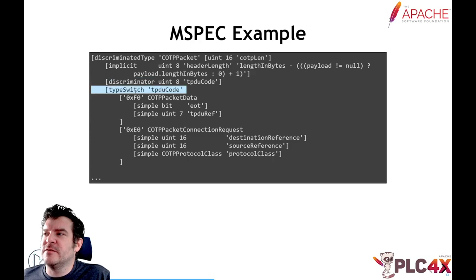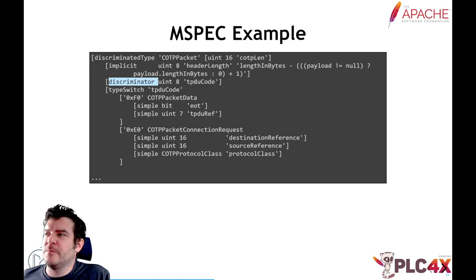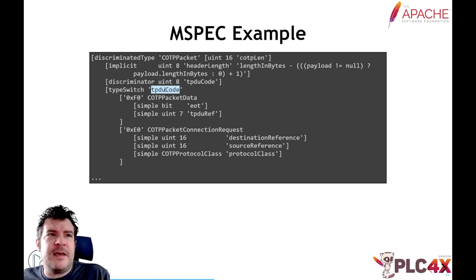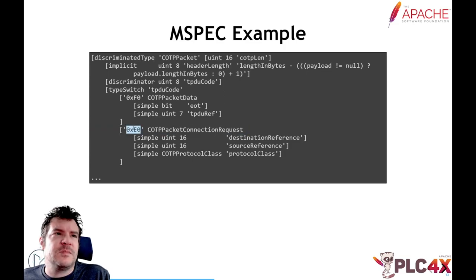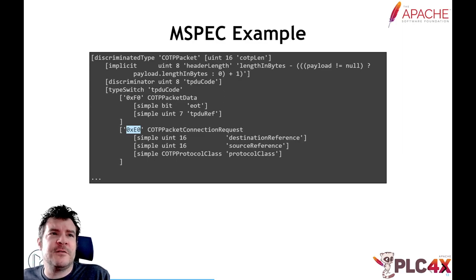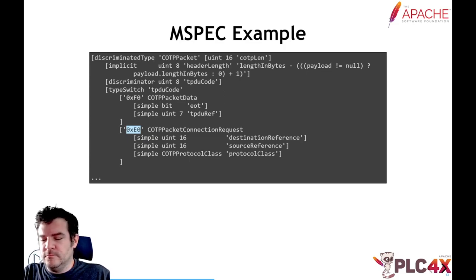A more complex example: in binary protocols you typically have a field that tells the parser what type is coming. Here we have a calculated header length field, then a TPDU code — an unsigned 8-bit integer named a discriminator. This field directly decides on the type of the object, so there's no need to store it explicitly. The type switch then compares the TPDU code: if it's 0xF0, it's a code TPP packet data; if it's 0xE0, it's a connection request. Depending on the type, it reads one bit as end-of-transmission and the remaining seven bits as a TPDU rev.